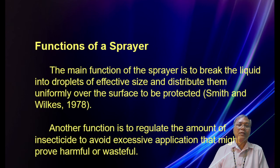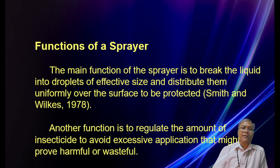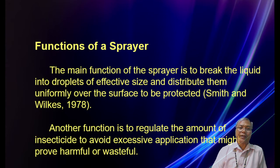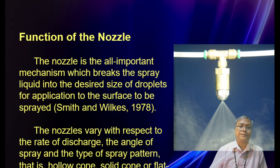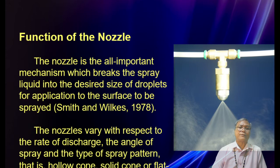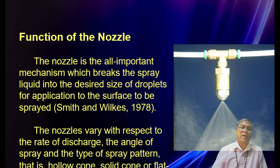Functions of a sprayer: the main function is to break the liquid into droplets of effective size and distribute them uniformly over the surface to be protected. Another function is to regulate the amount of insecticide to avoid excessive application that might prove harmful or wasteful. The nozzle is the all-important mechanism which breaks the spray liquid into the desired size of droplets. Nozzles vary with respect to rate of discharge, angle of spray, and the type of spray pattern — hollow cone, solid cone, or flat fan — and you can adjust the nozzle to the desired pattern.